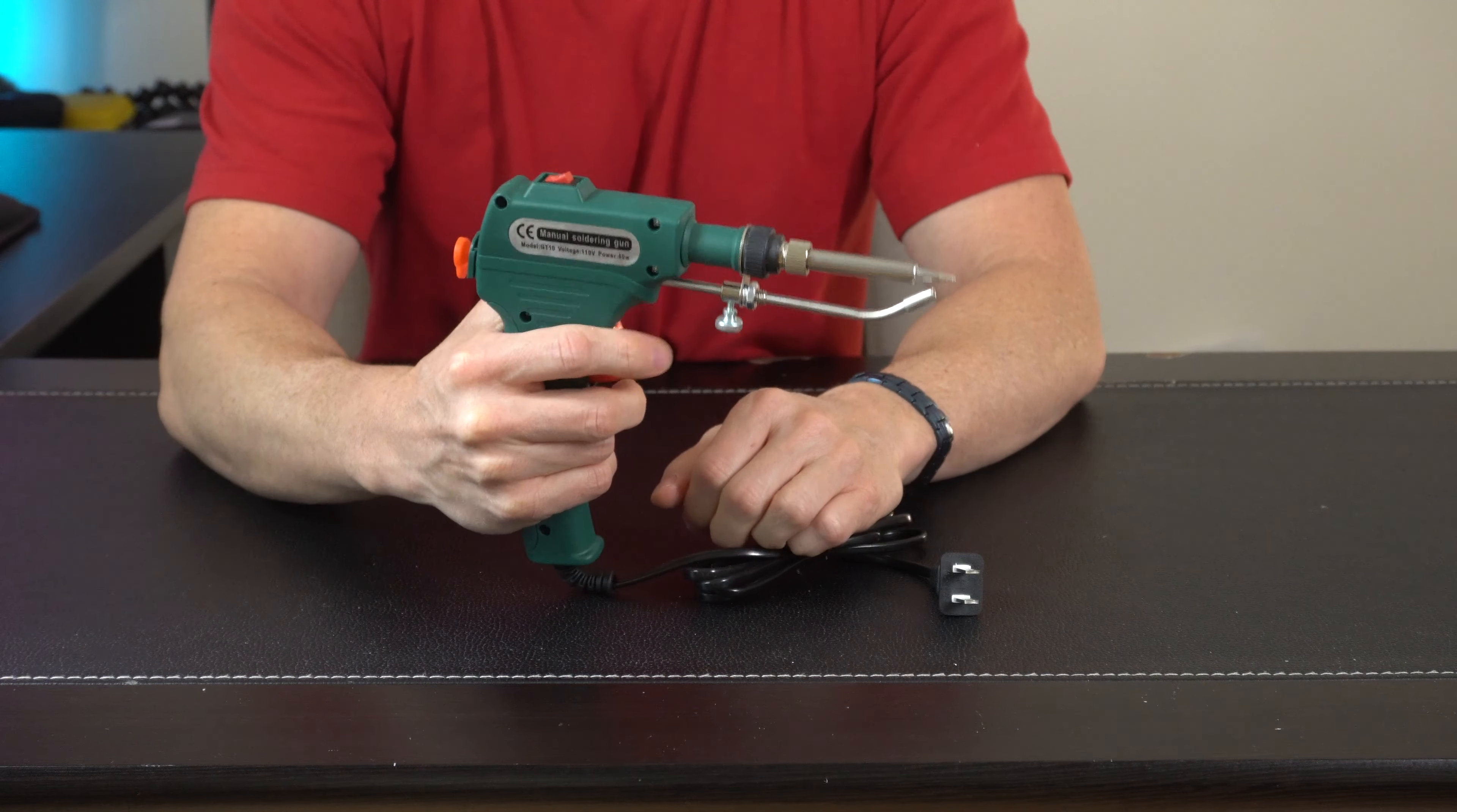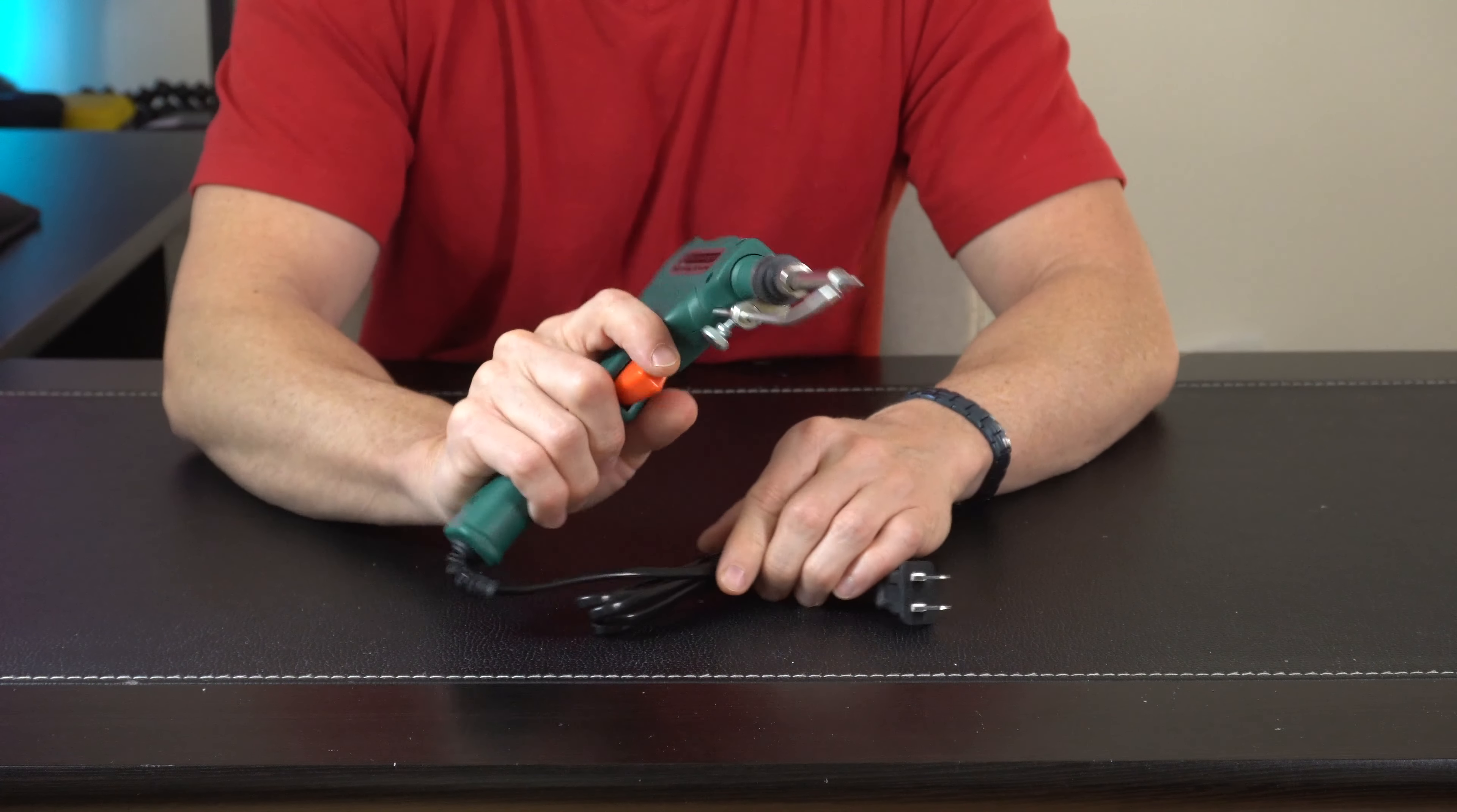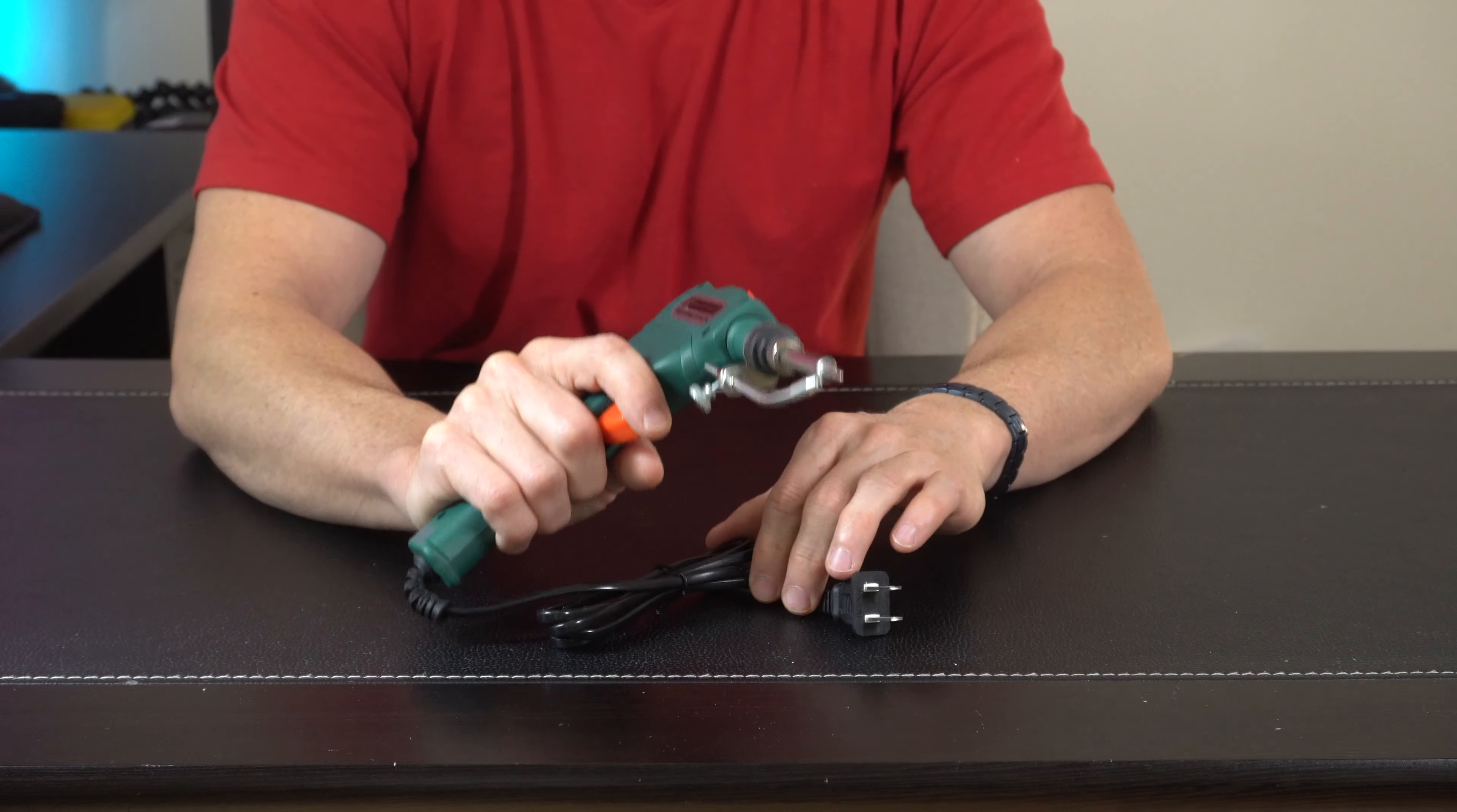And the thing that separates it here is we've got a trigger right here. So we're going to be able to put the spool of solder, feed it through, and as you pull the trigger, it's going to push it through right up onto the iron. So you can do this with one-handed operation and use your other free hand to hold your wire, electronics, or whatever it is that you're soldering.